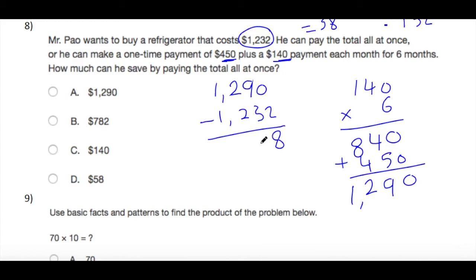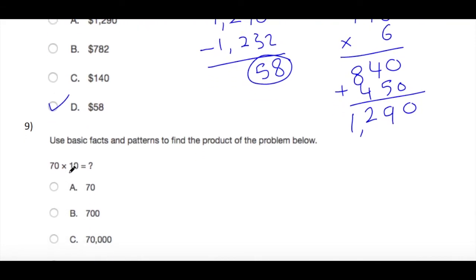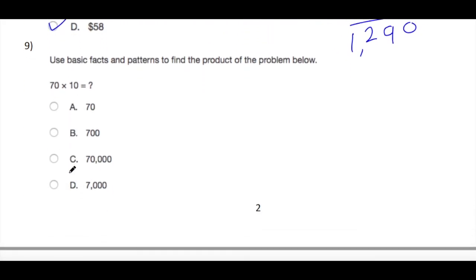Next: use basic facts and patterns to find the product of the problem below. 70 times 10 equals question mark.